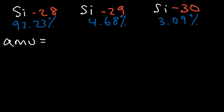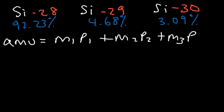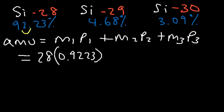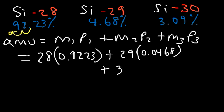So it's going to be M1 P1 plus M2 P2 plus M3 P3 since we have 3 isotopes. So the mass of the first isotope is 28. And 92.23% as a decimal is 0.9223. All you've got to do is take the decimal and move it 2 units to the left. So plus the second mass, which is 29, times the percentage of 0.0468, plus the next one, which is 30, times 0.0309.